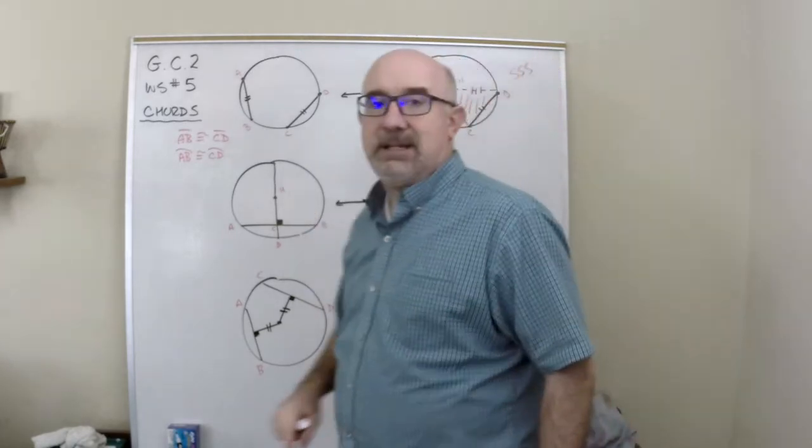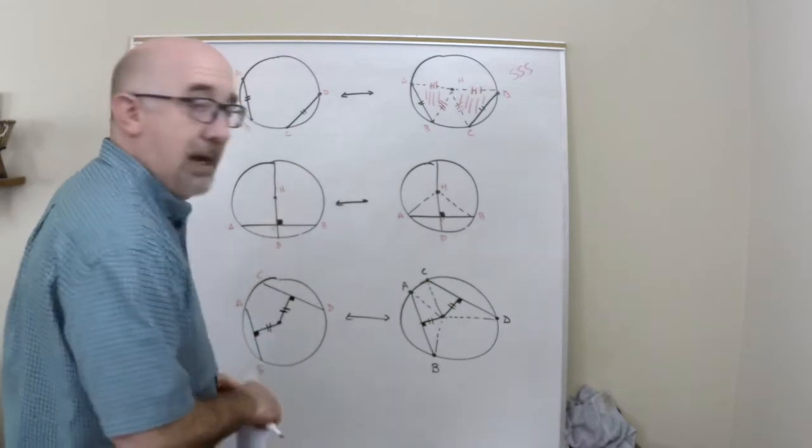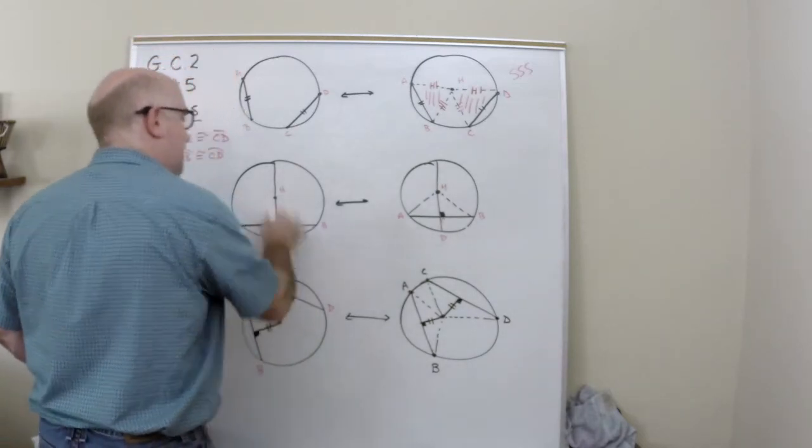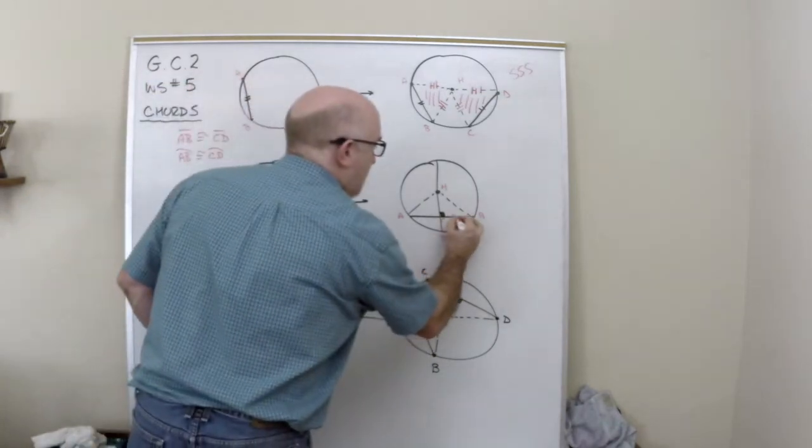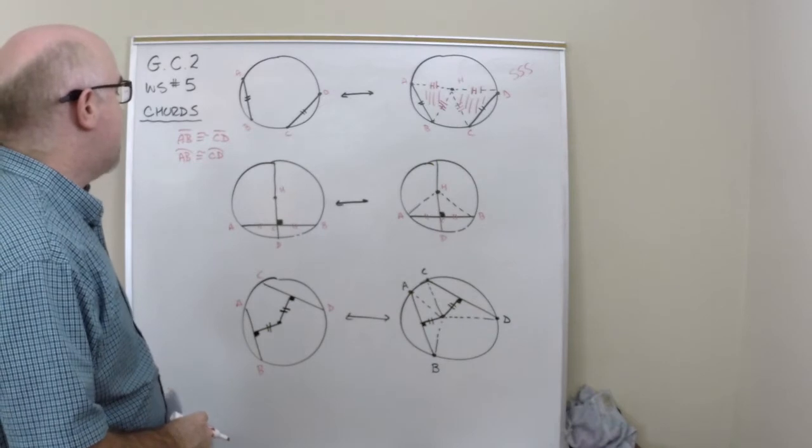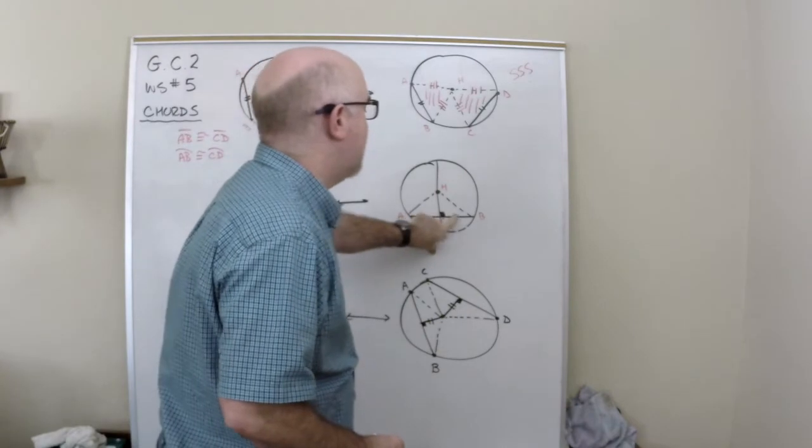The next thing they say is if you take the perpendicular bisector, so these would be equal, the perpendicular bisector. Actually, let's think about this. No, let's do it this way. Let's back up just a step. We're going to do it this way.